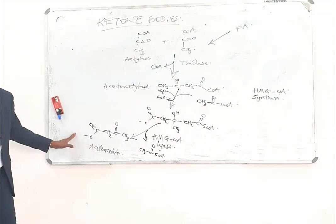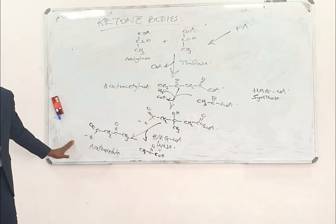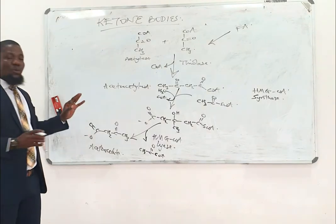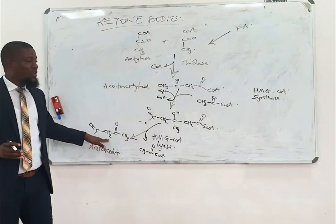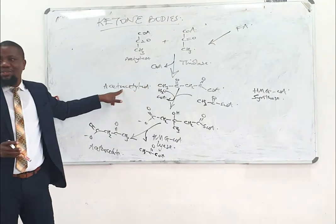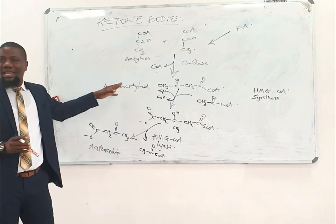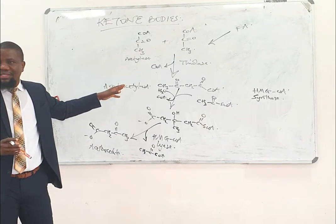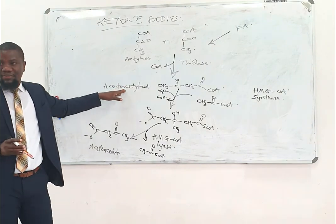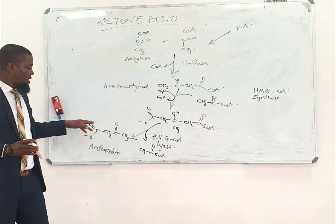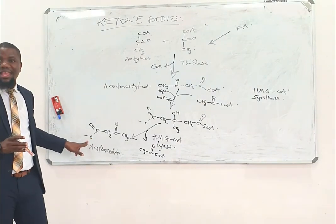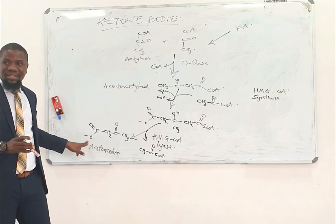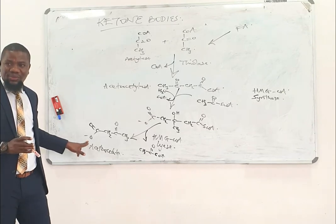This is the first ketone body. Acetoacetate is a ketone body. We are going to see three ketone bodies; we have seen one. The reason why acetoacetyl-CoA is not a ketone body is because their names are quite similar and their structures are not very different. This is a ketone body.